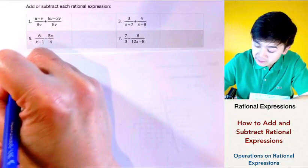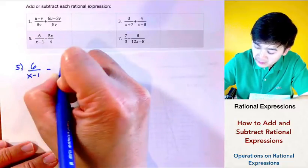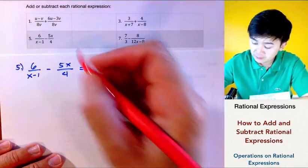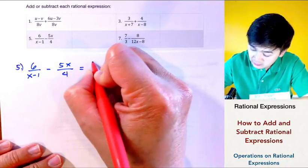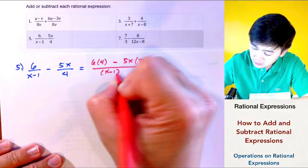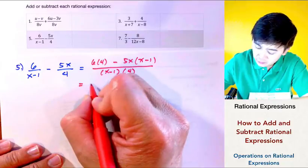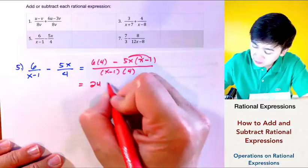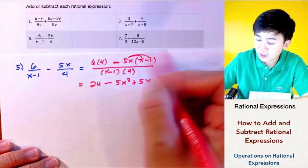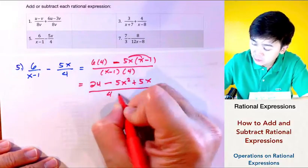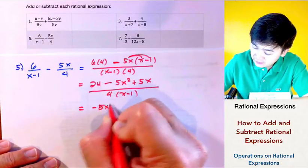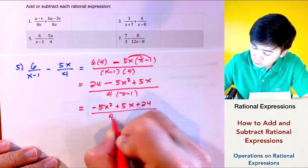For problem number five, we have 6 over X minus 1, minus 5X over 4. The denominators are not the same, so we use the formula. We combine 6 times 4, minus 5X times X minus 1, all over X minus 1 times 4. So 6 times 4 is 24, and distributing negative 5X to X minus 1 gives us negative 5X squared plus 5X. The signs are changed because we are subtracting. Rewriting in standard form gives us negative 5X squared plus 5X plus 24, all over 4 times X minus 1.